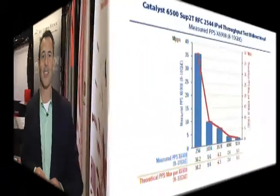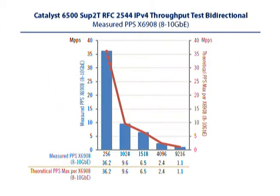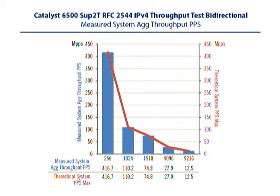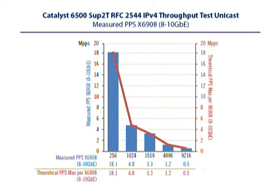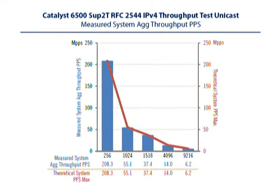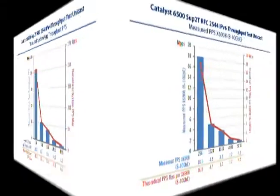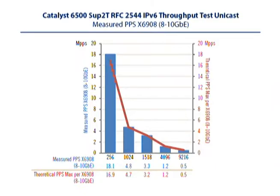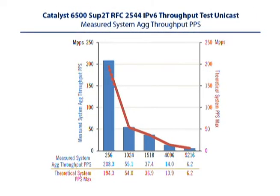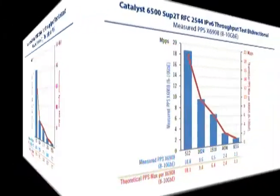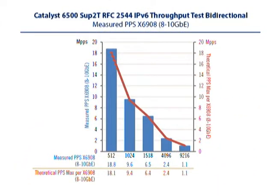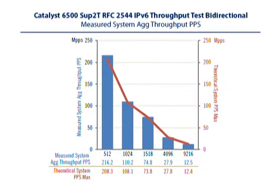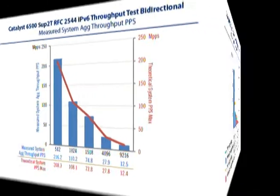To demonstrate how the Catalyst 6500 upgrade with Supervisor 2T has improved IPv6 performance, we'll measure IPv4 and IPv6 in both unicast and bidirectional traffic performance via RFC 2544. For IPv4 traffic over MPLS, we measured throughput via RFC 2544 and the Catalyst 6500 achieved the performance we expected. We then compare IPv4 to IPv6 over MPLS performance and verify that the Catalyst 6500 delivers IPv6 performance on par with IPv4, noting that IPv6 headers are nearly four times larger than IPv4.